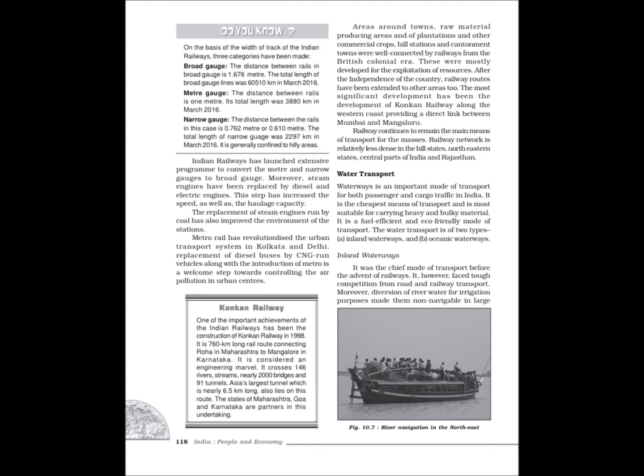Areas around towns, raw materials producing areas, plantations and other commercial crops, hill stations and cantonment towns were well connected by railways from the British colonial era, mostly developed for the exploitation of resources. After independence, railway routes have been extended to other areas too. The most significant development has been the Konkan Railway along the western coast, providing a direct link between Mumbai and Mangalore. Railway continues to remain the main means of transport for the masses. Railway network is relatively less dense in hill states, northeastern states, central parts of India and Rajasthan.